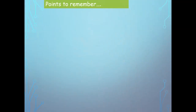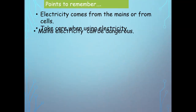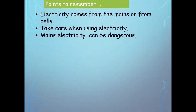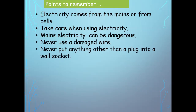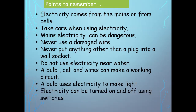Points to remember: electricity comes from the mains or from cells. Take care when using electricity — mains electricity can be dangerous. Never use a damaged wire. Never put anything other than a plug into a wall socket. Do not use electricity near water. A bulb, cell, and wires can make a working circuit. A bulb uses electricity to make light. Electricity can be turned on and off using switches.